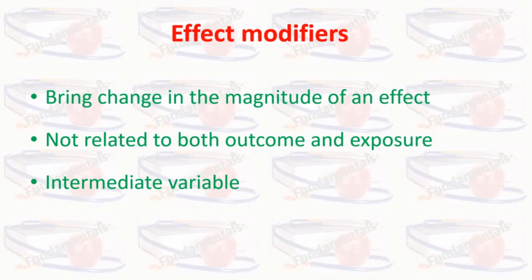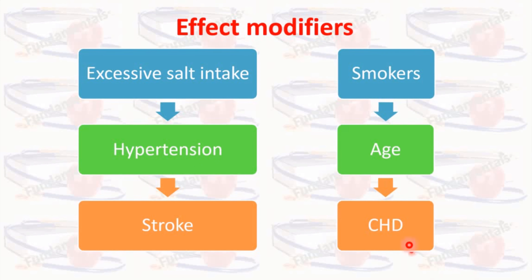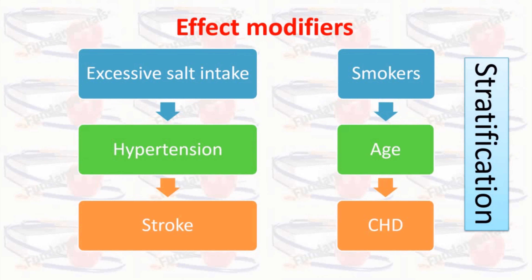Effect modifiers are variables that bring about a change in the magnitude of an effect. Unlike confounders, effect modifiers are not required to be related to both exposure and outcome variables. For example, if we want to determine the incidence of stroke among excessive salt users, the outcome will be affected by hypertension. Similarly, if we want to determine the incidence of coronary heart disease among smokers, the outcome will be affected by age. In all such cases, age is an effect modifier, and its impact has to be reported through stratification.